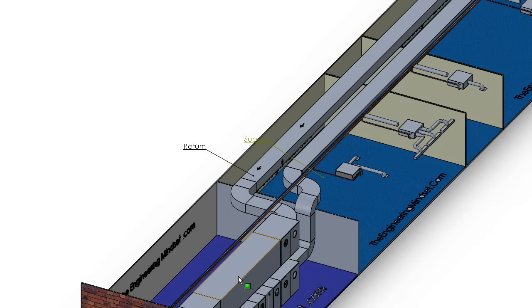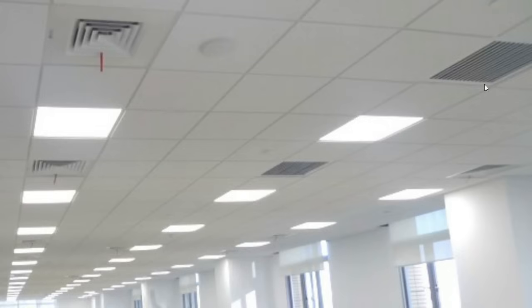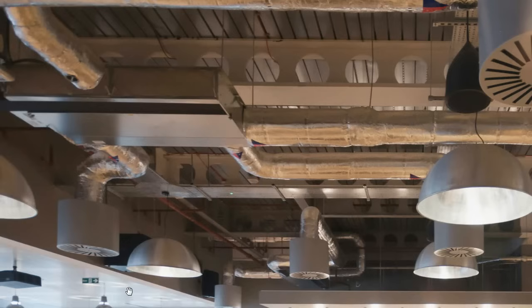The fan coil units are located up in the ceiling. This is a false ceiling in a typical office, and here you can see the supply diffusers — that treated, tempered air is being supplied into the office where it can circulate. All of it gets sent back up through these return grills.